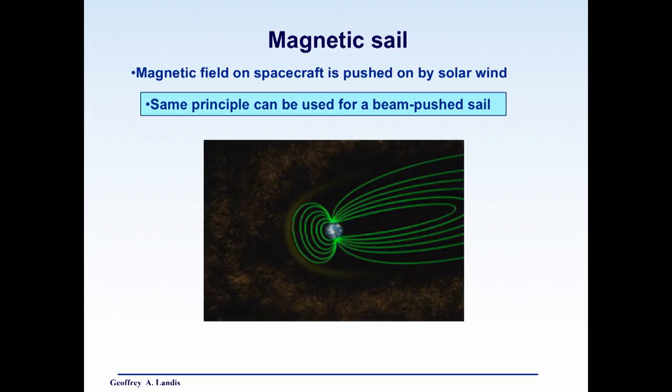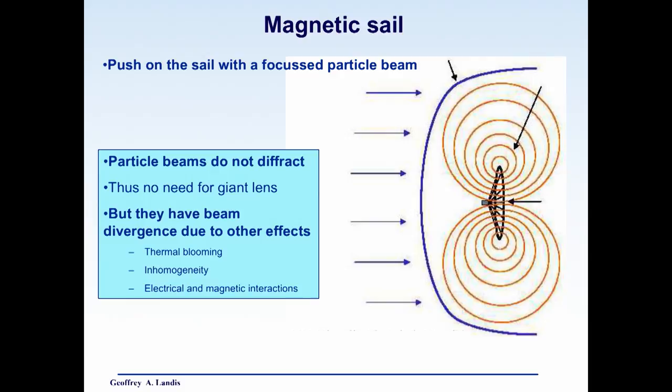Well, there's some other possibilities. I talked about magnetic sails before, but you could also use a beam driven magnetic sail. It just means push on the sail with a focused particle beam. Why a particle beam? Good news, particle beams don't diffract, so you don't need the giant lens. Bad news is they diverge for other reasons, particularly thermal blooming, inhomogeneity, electrical magnetic interactions. Particle beams over very long distances do not want to stay pencil beams. There's actually a NIAC proposal that just got awarded that's trying to look at solving that, but right now particle beams have some questions that need to be answered first.